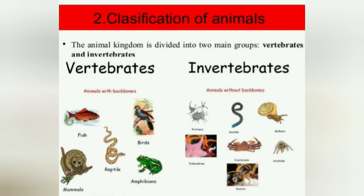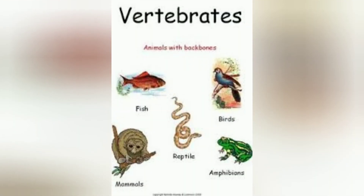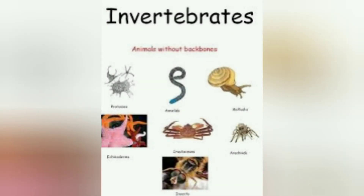Animals are further classified as vertebrates and invertebrates. The animal kingdom is divided into two main groups. Animals with a backbone are called vertebrates and animals without a backbone are called invertebrates. Examples of vertebrates include fish, birds, reptiles, mammals, and amphibians. Examples of invertebrates include snails, spiders, and worms.